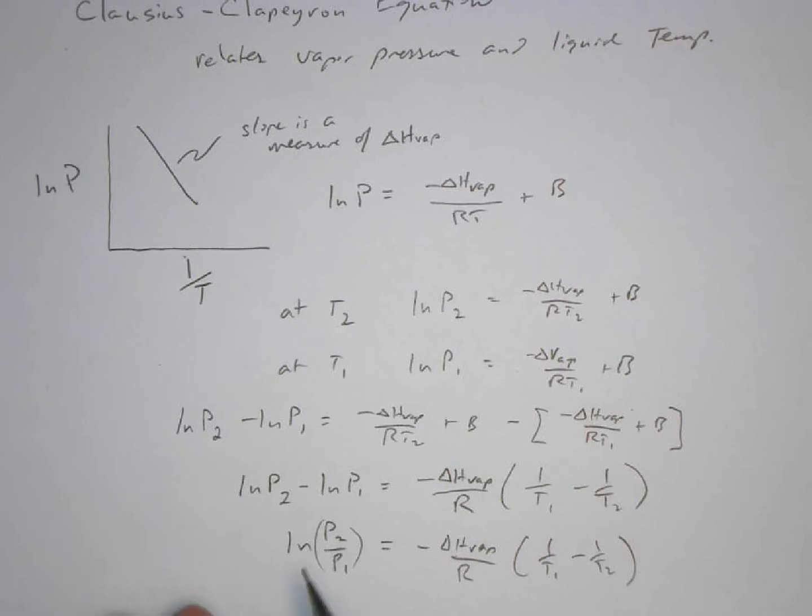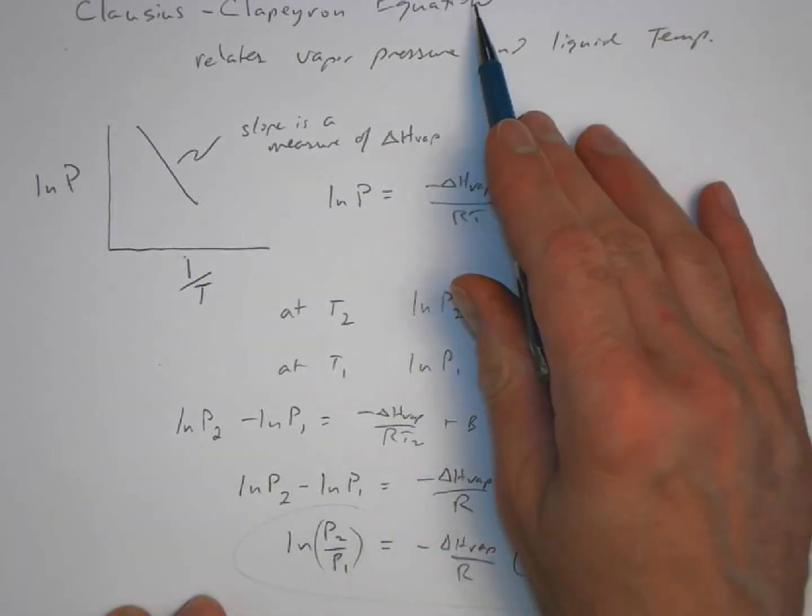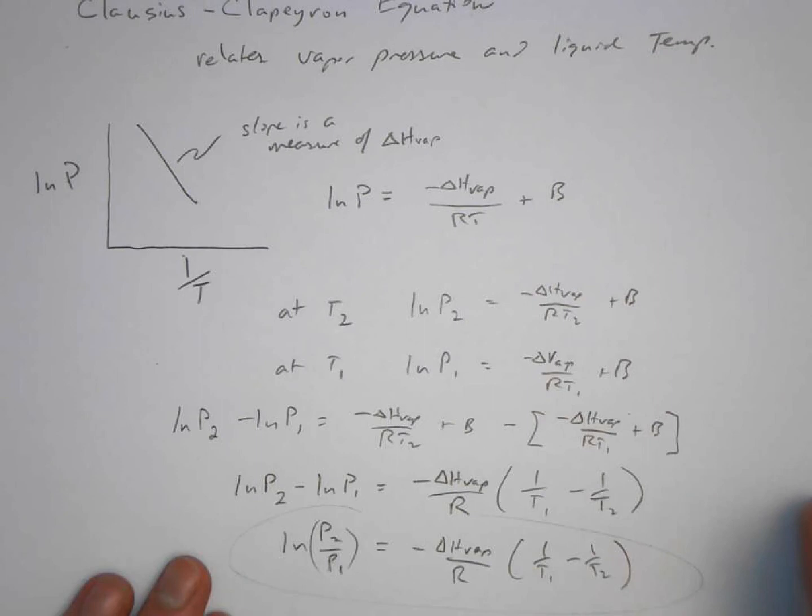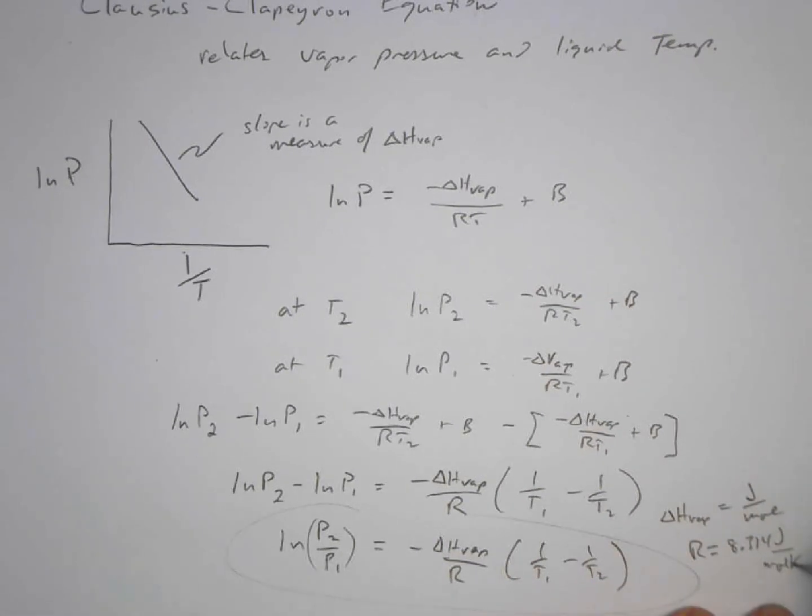Okay, this equation is called the Clausius-Clapeyron equation. Just a few things to keep in mind: delta H of vaporization is in units of joules per mole, and R is our gas constant, 8.314 joules per mole Kelvin.